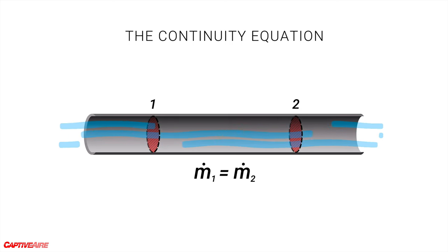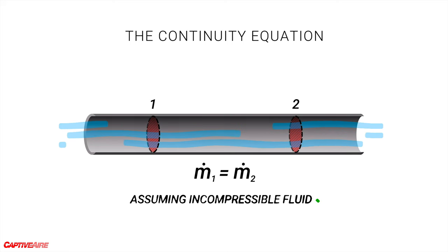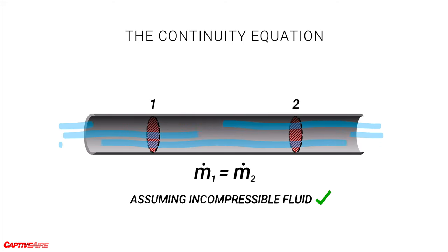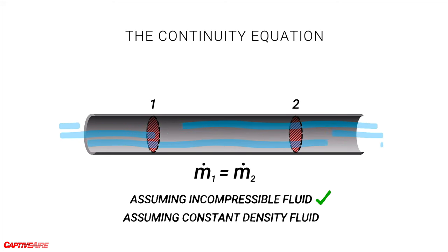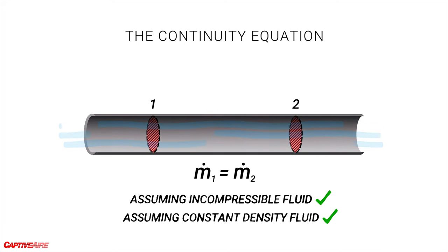We can express this as an equation showing that the mass flow is equal at both points. We're making a couple of assumptions here: we assume the fluid is incompressible, which except for extreme cases is true for all liquids, and we also assume the density of the fluid isn't changing. So here, as long as the temperature remains constant, this holds true.